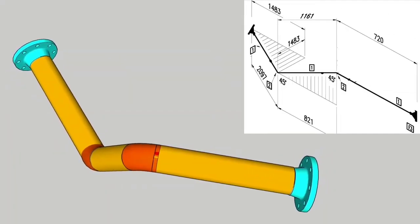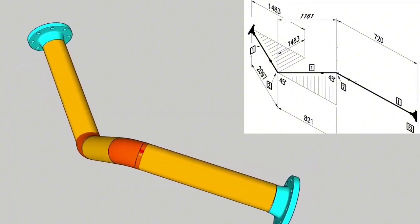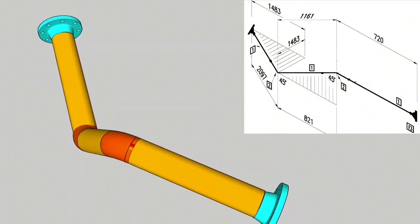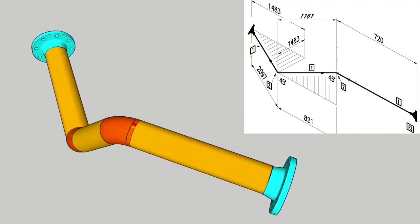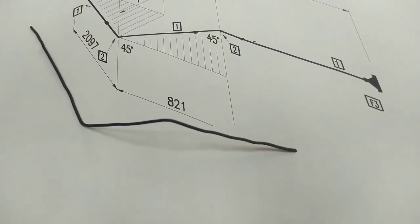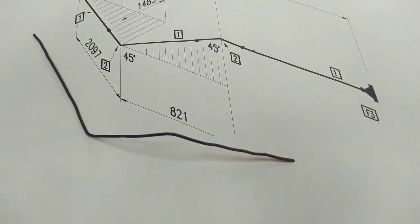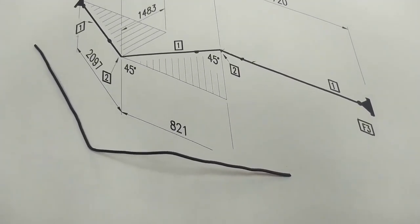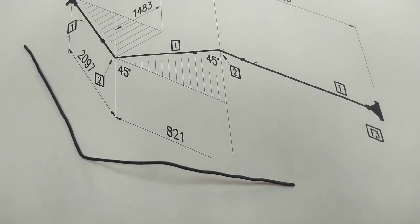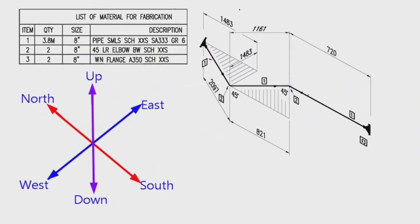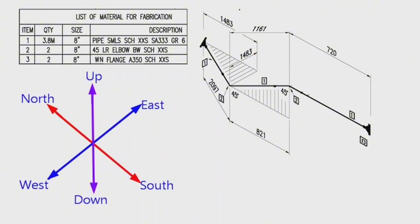We are continuing our tutorial with the next video. In this video, we will learn the isometry of the pipeline bent in different directions and watch the 3D model of this pipeline. Also, we will be bending the wire according to the isometry. If you watch the video until the end, I am sure it will be very useful for you. Let's start the piping tutorial video. This is the pipe isometric drawing. This pipeline consists of one spool only. Let's learn the materials used in the pipeline — this is the list of materials for fabrication.